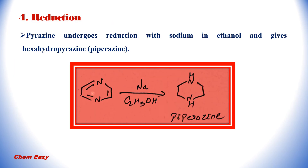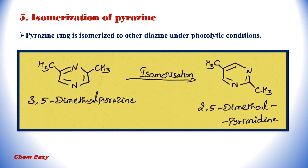When pyrazine is reduced with sodium in ethanol, it undergoes complete reduction and produces hexahydropyrazine, i.e. piperazine. The next reaction is isomerization of pyrazine. The pyrazine ring is isomerized to other diazines under photolytic conditions. For example, 3,5-dimethylpyrazine on isomerization produces 2,5-dimethylpyrimidine — that is, a 1,4-diazine converts to a 1,3-diazine after isomerization.